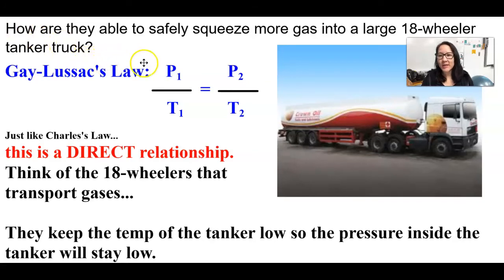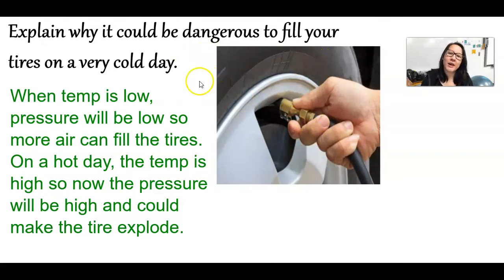So, with Gay-Lussac's law, let's consider how they're able to safely squeeze more gas into a large 18-wheeler tanker truck. So, if you consider pressure and temperature have a direct correlation, then they can keep the temperature very low, which keeps the pressure very low inside of the tanker truck. How could it be dangerous to fill your tires on a very cold day? Well, when the temperature is low, the pressure is low, and so you could put more air in your tires than maybe you're supposed to. And then, if you get the tires hot, then the temperature will increase, causing the pressure to increase, and so they could explode if actually you have a higher pressure than you're supposed to at that hot temperature.